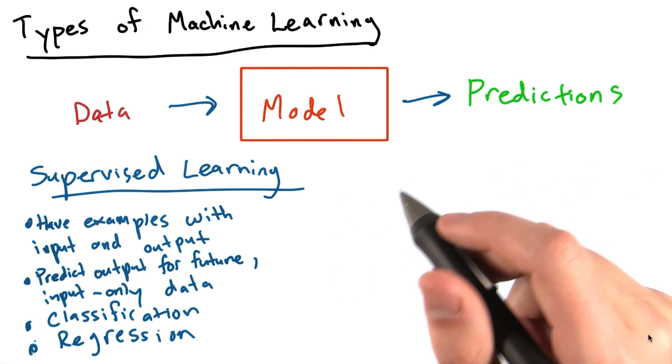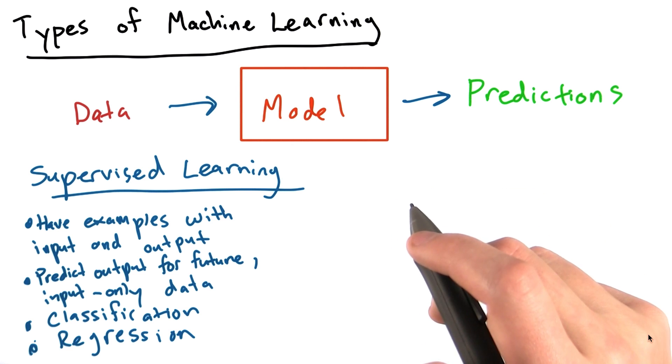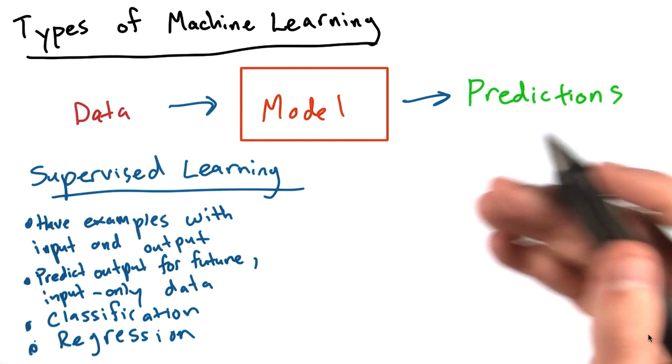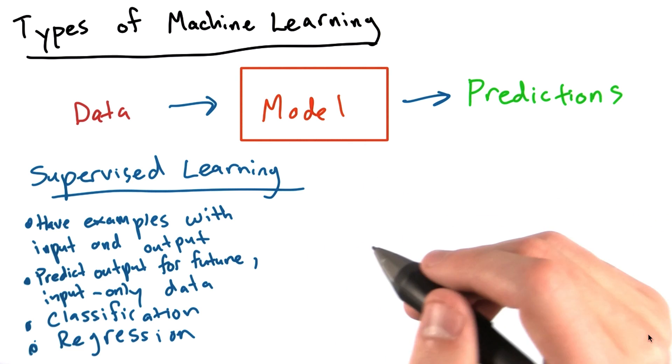Another example of supervised learning would be estimating the cost of a new house. Given that we have a number of examples where we know about a bunch of features, like the square footage or the number of rooms or the location, and we also know how much that house sold for.